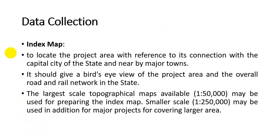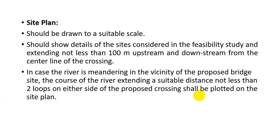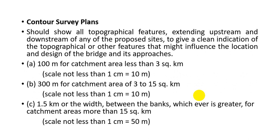In data collection, the first item is the index map, which locates the project area and shows connectivity with nearby cities or major towns. It provides a bird's-eye view at a scale of 1:50,000 or smaller. The site plan should be suitably drawn, covering an area extending 100 meters upstream and downstream of the crossing. If the river is meandering near the bridge, more than two loops on either side of the proposed crossing should be covered. Contour survey plans can be obtained from the Survey of India.